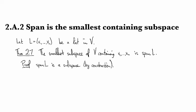It's also pretty clear that it contains each of the vectors V1 through Vm, and the reason for that is just when you take a linear combination of these guys...